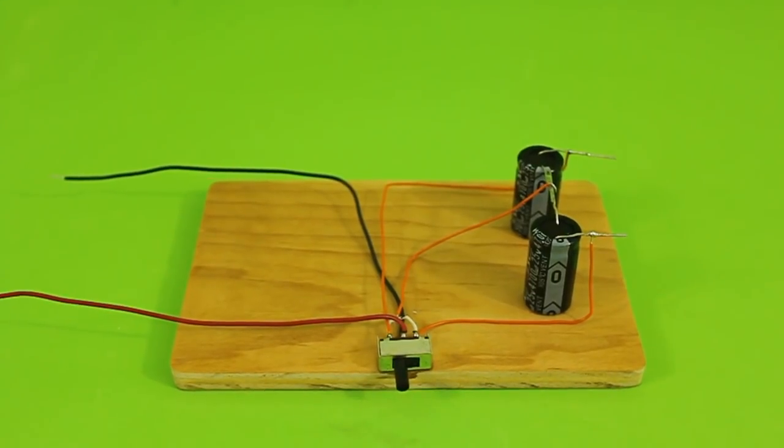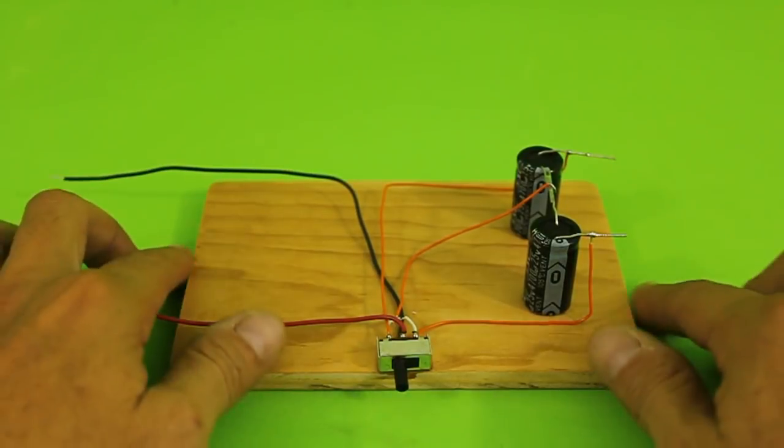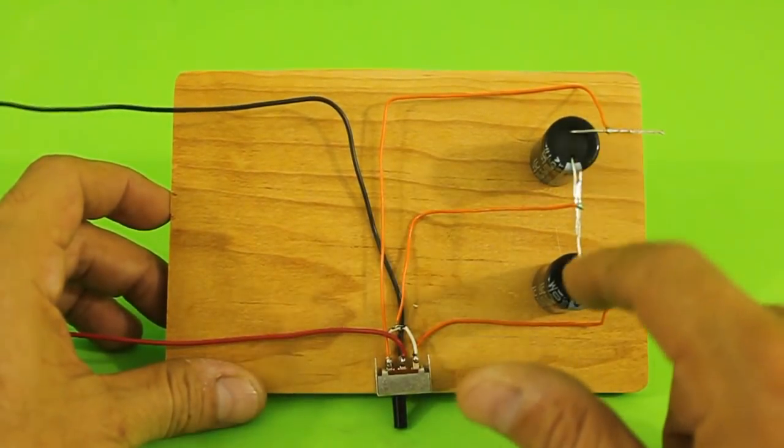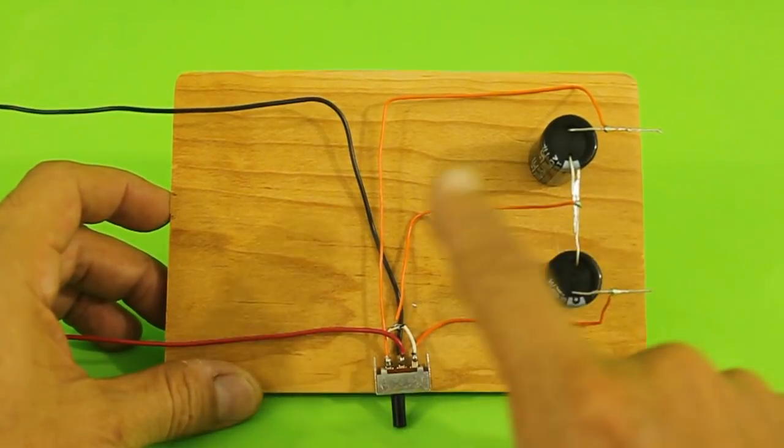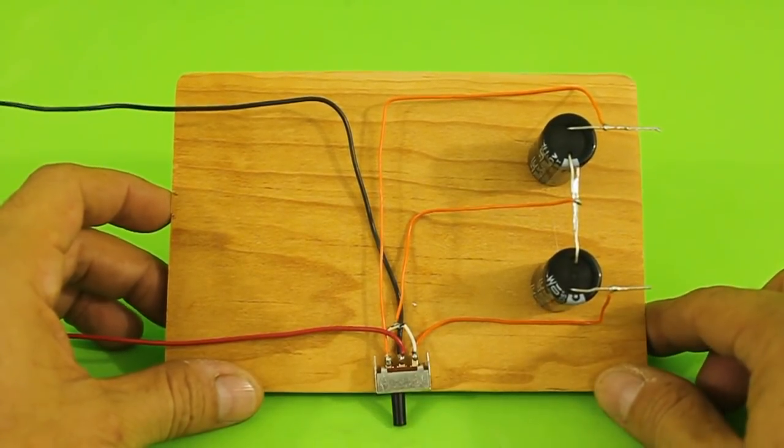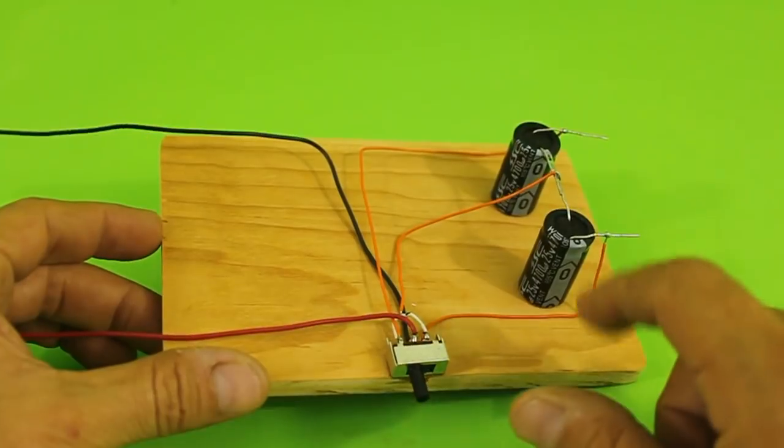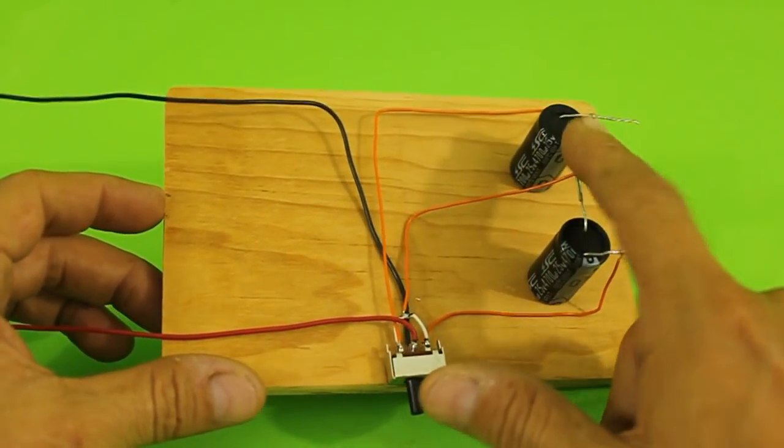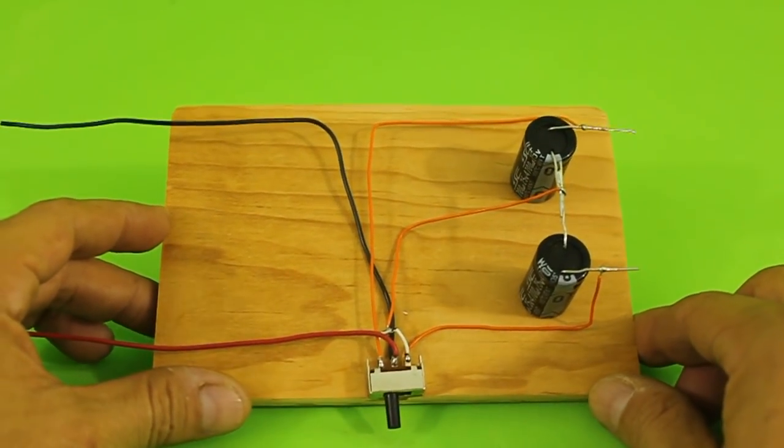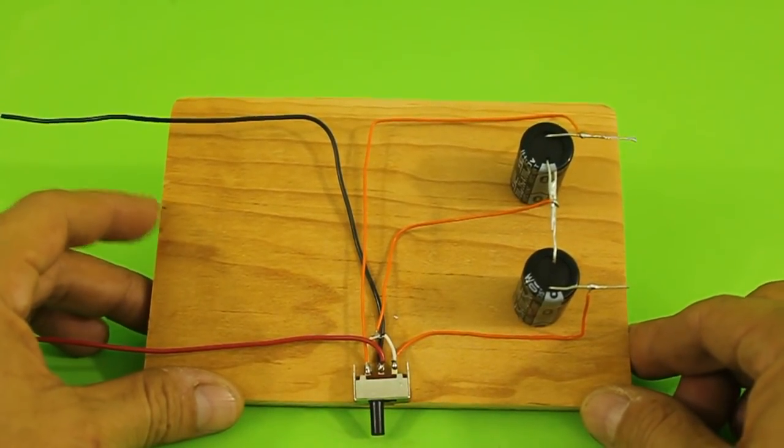Here's our model of the DC to DC voltage doubler. We have the two capacitors connected in series and the connections of the switch. I am using two capacitors of 4700 microfarads.